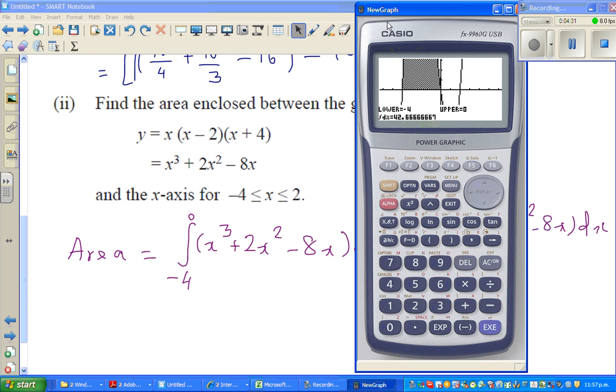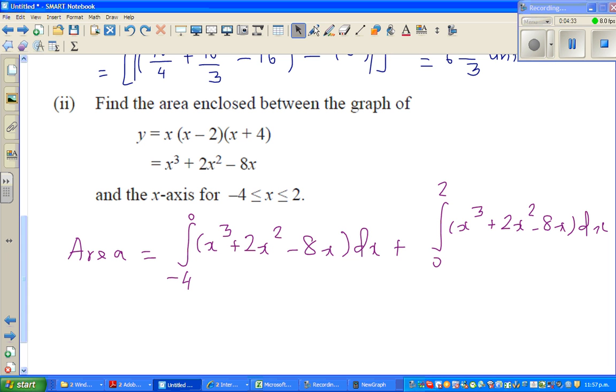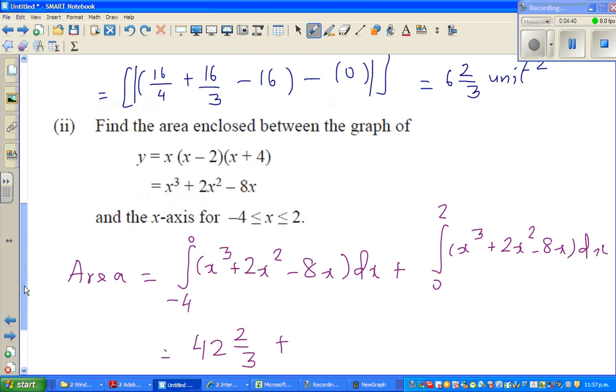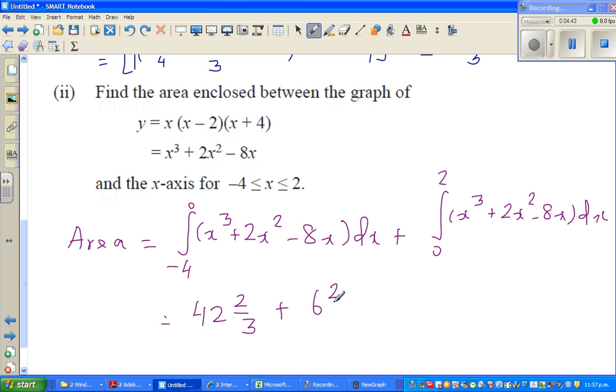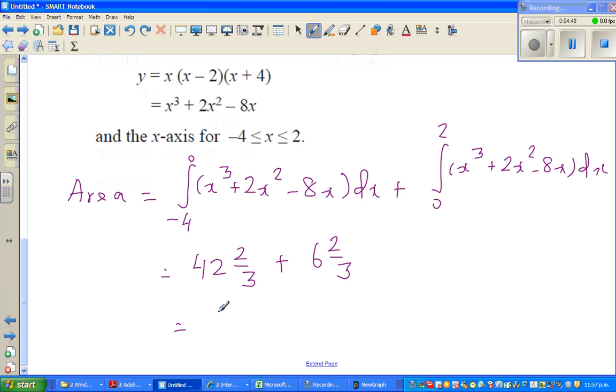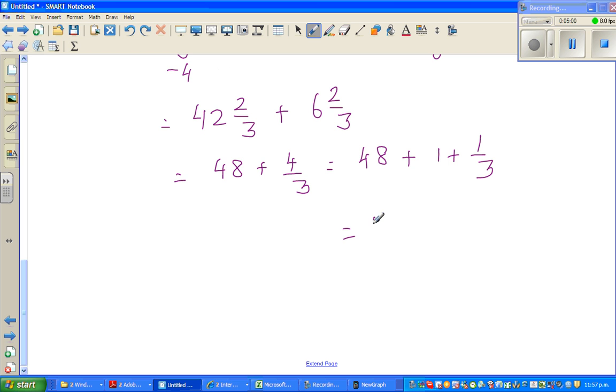So this area is 42 and 2/3. So I can say the answer is 42 and 2/3 plus this was 6 and 2/3, 6 and 2/3. So this is 48 plus 4/3, which is 48 plus 1 plus 1/3. So the final answer is 49 and 1/3 unit squared.